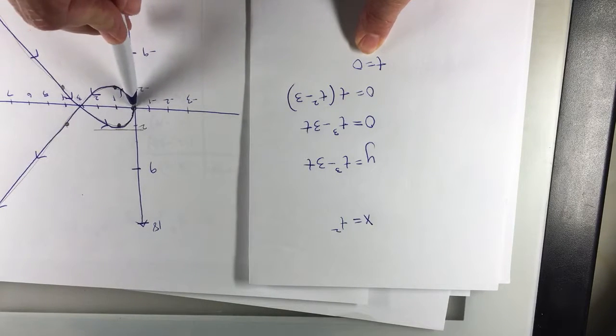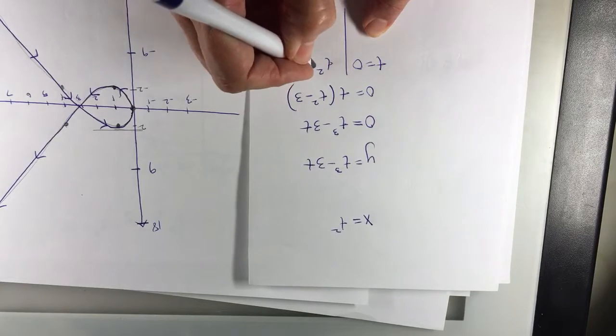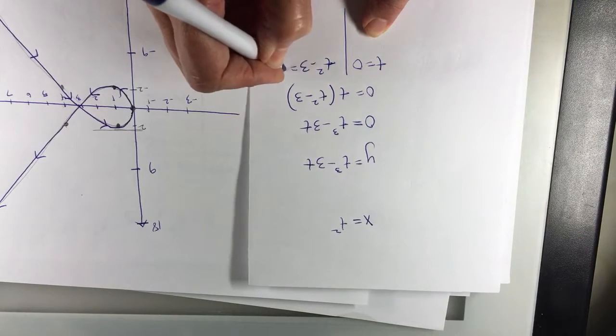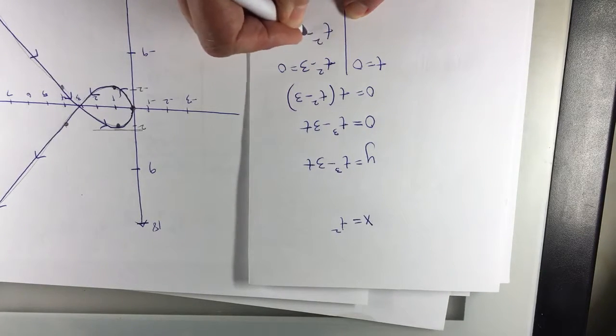That's this point right here. Okay, and then t squared minus 3 is 0, so t squared is 3.